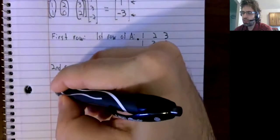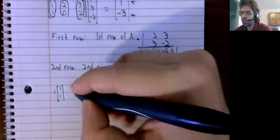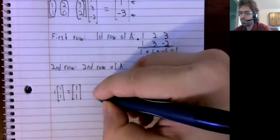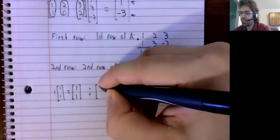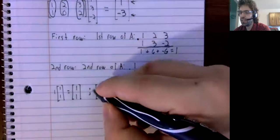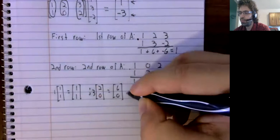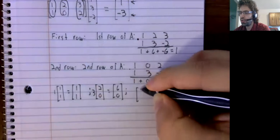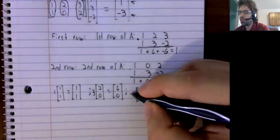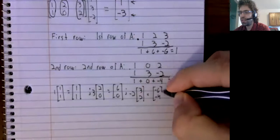So the first column times 1 is 1, 1. The second column times 3 is 6, 0. The third column times negative 2 is negative 6, negative 4.